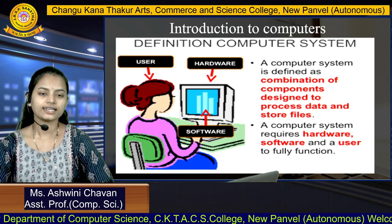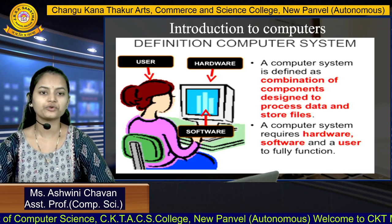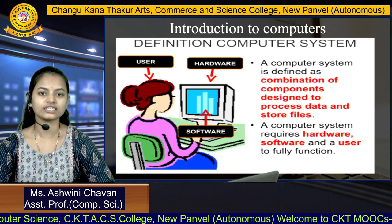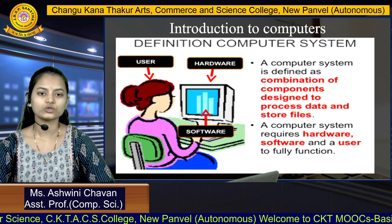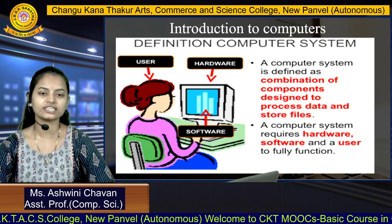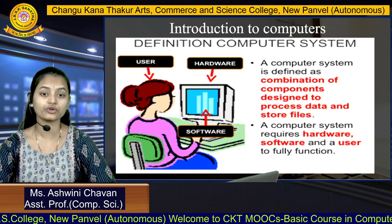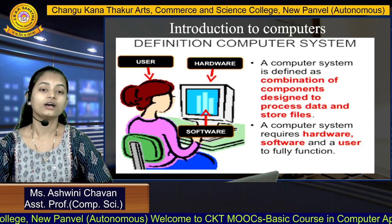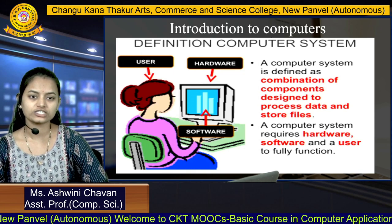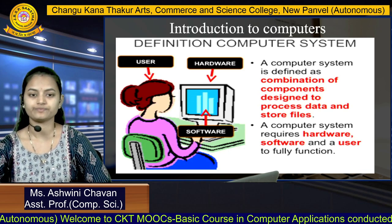There are three main components in our computer system. In the figure you can see there is a user, there is software, and there is hardware. These are the three main components of the computer system, without which the computer system cannot be fully functional.